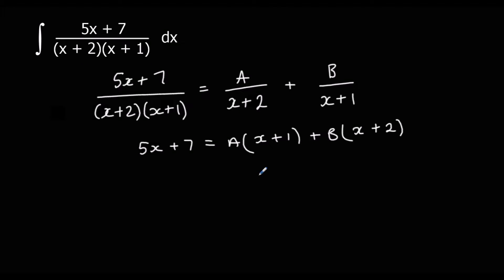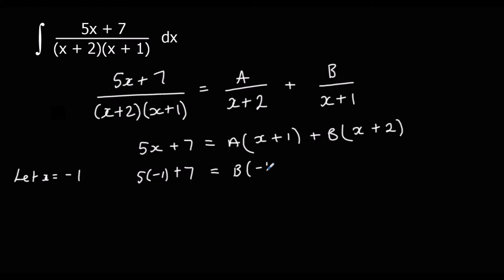We work out A and B by substituting in a value for x. If we let x equal negative 1, we eliminate A, because we'll have A times 0. So: 5(-1) plus 7 equals B times (-1 plus 2). That gives us 2 equals 1b, so B is 2.